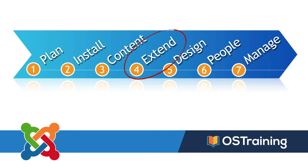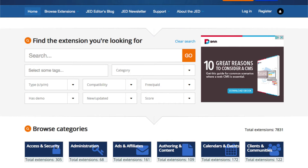The next step in our Joomla workflow is number four: Extend. I know we've done a lot of work getting that content in, and it does take work, but it's going to be worth it as we continue to build our site. If you didn't complete the content step, I encourage you to go back and finish it up, simply because a lot of the content is what we're going to use in order to show how Joomla manages content — and you have to have some.